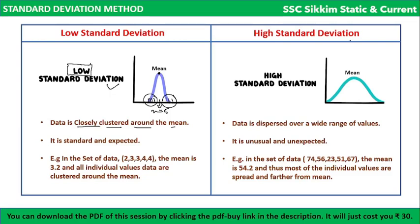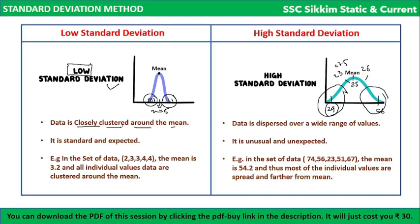In high standard deviation, the values are spread far from the mean. For example, if the mean is 25 but values include 56, 20, 19, 7, and others like 23, 26, 23.5 — the maximum values are far from the mean. So high standard deviation means data is dispersed over a wide range of values, whereas low standard deviation means data is closely clustered around the mean.